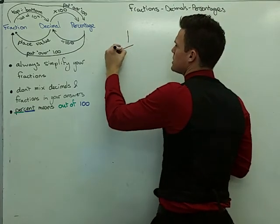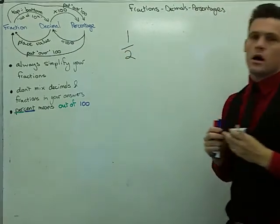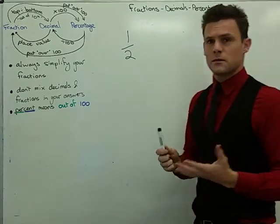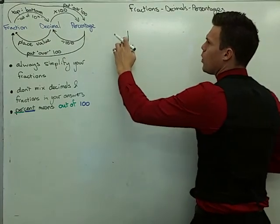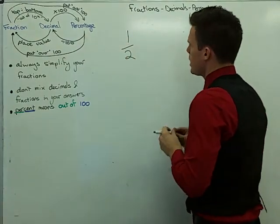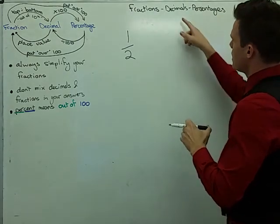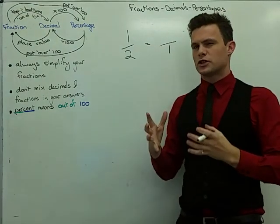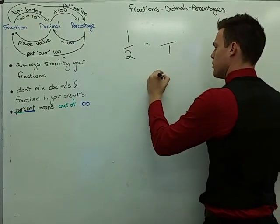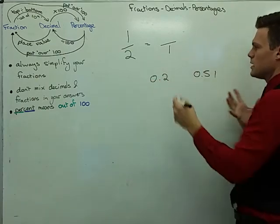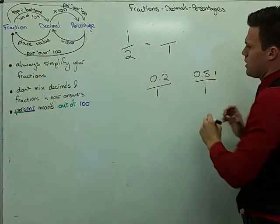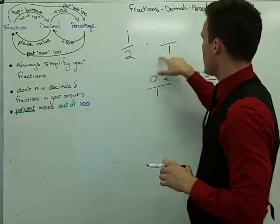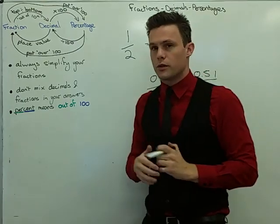So if I had a fraction, we'll start really simply. If I had one half, the way we convert between fractions and decimals is I simply look at this and I go, I've got one out of two. Now what decimals are actually working out is, what if this were over one? That's what a decimal is actually doing. All decimals, be it 0.2, 0.5, 1 — they're all technically over one. It's kind of saying, well, I've got one out of two units — what if I only had one unit, how many would I have? It's kind of a ratio thing here.